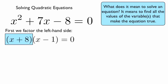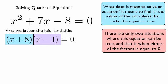Well, notice we have two factors here. And whenever you multiply two numbers together to get 0, one of them has to be equal to 0. Or both of them, if possible. But there's no way that it could be 0 if neither of them are equal to 0. So therefore, there are only two situations where this equation can be true, and that is when either of the factors is equal to 0.